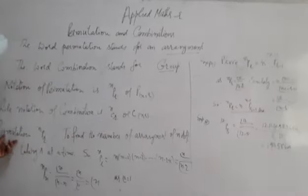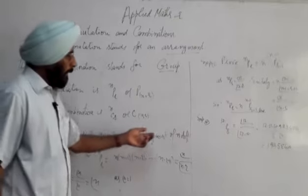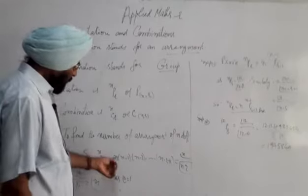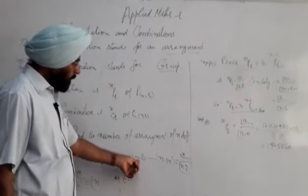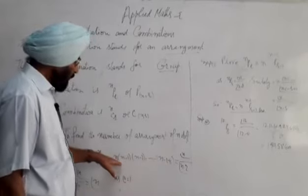Permutation nPr is used to find the number of arrangements of different things taken r at a time. nPr equals n times (n-1) times (n-2) up to (n-r+1), taking r terms.